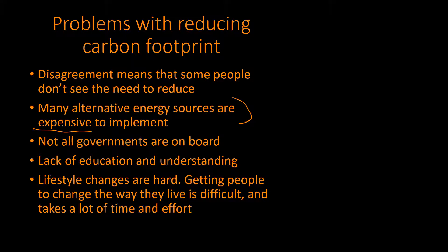Not all governments are on board — famously the US didn't sign the Kyoto Protocol, and there are examples of countries not agreeing to reduce their emissions as much as we would like. At the personal level, there's a lack of education and understanding on climate change. A lot of people, particularly in older generations, don't understand the impact we're having, or that using different forms of energy and making different choices is actually beneficial to the environment and will benefit future generations — and that might not be their fault, some people just haven't been taught that.